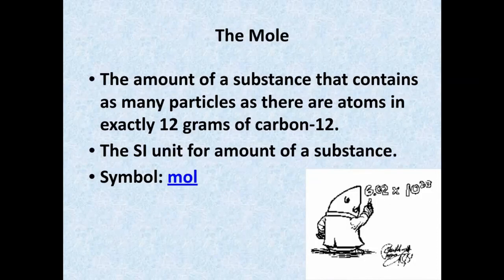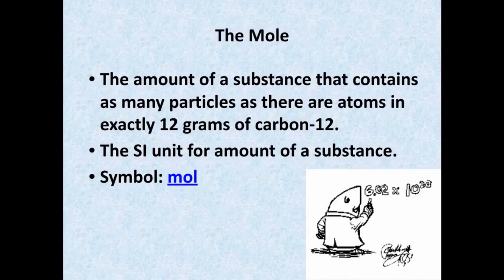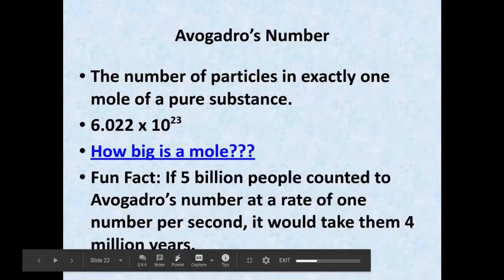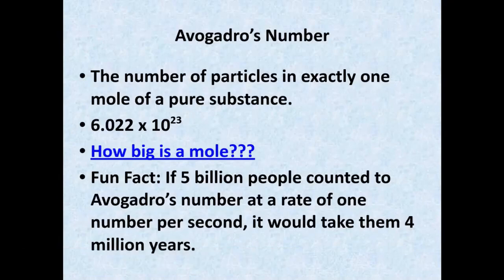First of all, we have what's called the mole. The mole is an amount — just like a dozen means 12, the mole is the number of particles of atoms in exactly 12 grams of carbon-12, and this is an SI unit. So if I say what is the SI unit for amount, you would say a mole. A mole is designated as 6.022 times 10 to the 23rd, which is Avogadro's number — the number of particles in exactly one mole of a substance.